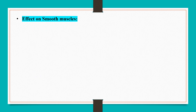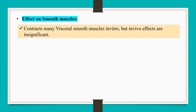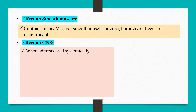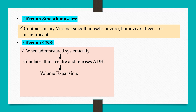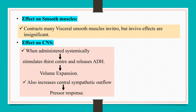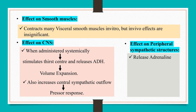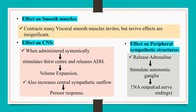Effect on smooth muscles: angiotensin 2 contracts many visceral smooth muscles in vitro, but in vivo effects are insignificant. Effect on the CNS: it produces volume expansion and a pressor effect. When administered systemically, it stimulates the thirst center, releases anti-diuretic hormone, and causes volume expansion. It also increases central sympathetic outflow and produces a pressor response. Effect on peripheral sympathetic structures: it releases adrenaline, stimulates autonomic ganglia, and increases noradrenaline output from adrenergic nerve endings.